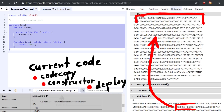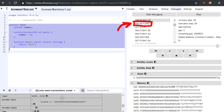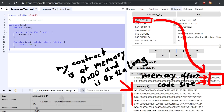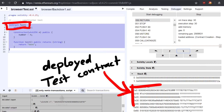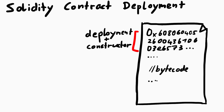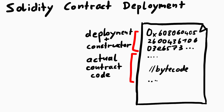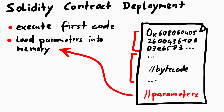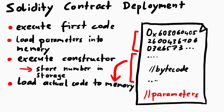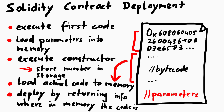It does this by simply loading the actual contract code into memory and then doing a return. This return instruction wants two values on the stack: a memory offset and size. This will tell the Ethereum blockchain my contract code starts at 0 and is 0x12a long. Now this code from memory becomes our actual real contract code. To summarize: we have a big chunk of code containing deployment, constructor code, and the real contract code. We execute the first code which loads parameters, runs the constructor (e.g., setting storage), then loads the actual contract code into memory, which is deployed once we return with the value defining that memory range.